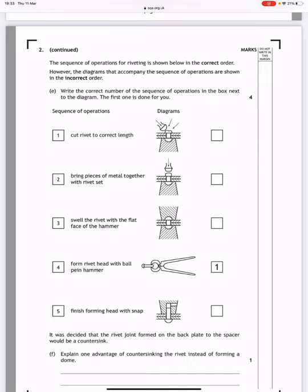So we can see that for cutting the rivet to the correct length, the diagram for that is the second one from the bottom, where it gives you one as the correct operation. The next one, bring pieces of metal together with the rivet set, that would be the very bottom diagram.